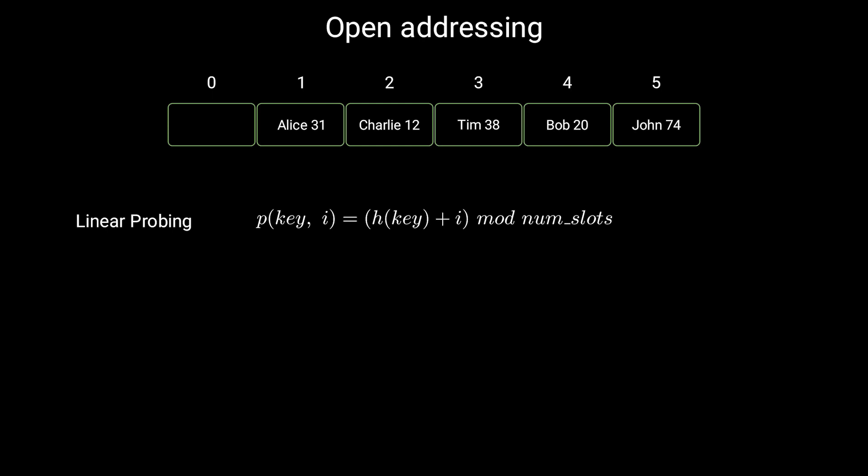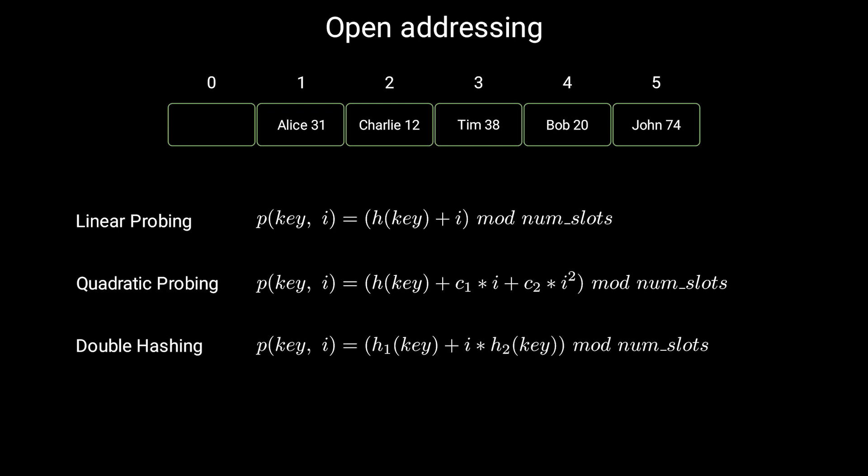There are other probing techniques such as quadratic probing and double hashing. Quadratic probing is better than linear probing, while double hashing offers one of the best methods available for open addressing. This is because the permutations that are produced have many characteristics of a randomly chosen permutation. However, we need to choose the right parameters to ensure the probing sequence is a permutation. This can sometimes be tricky.